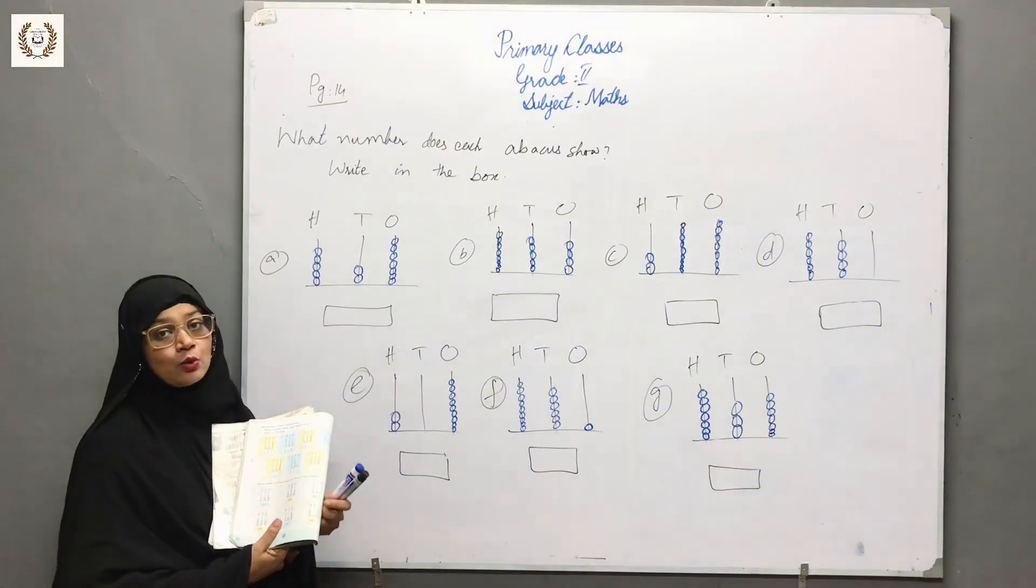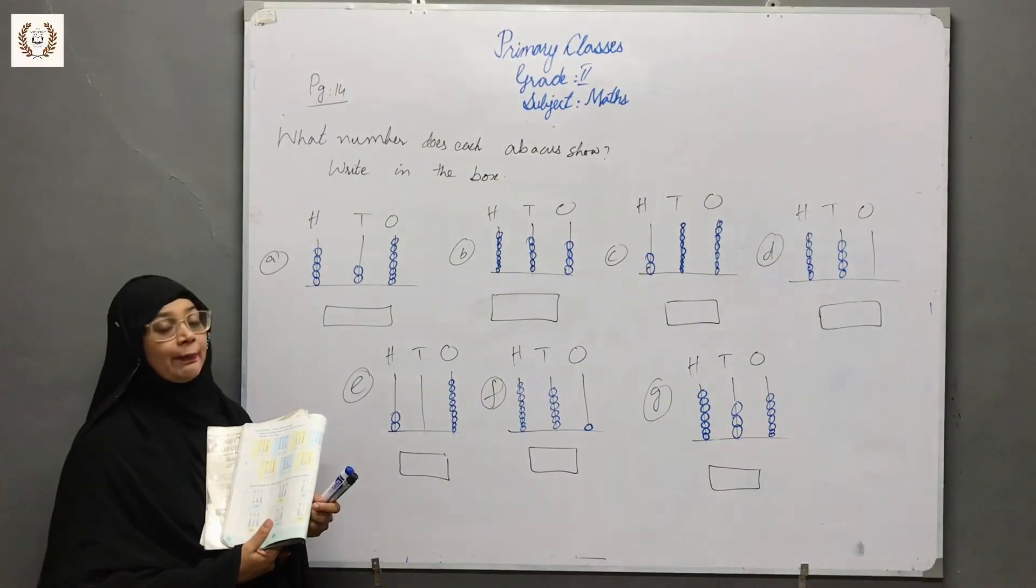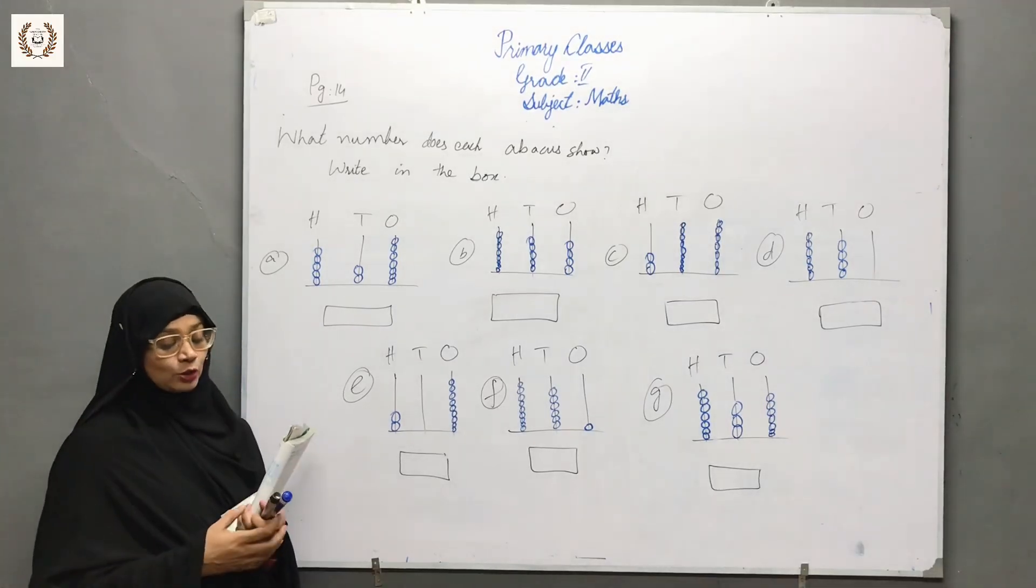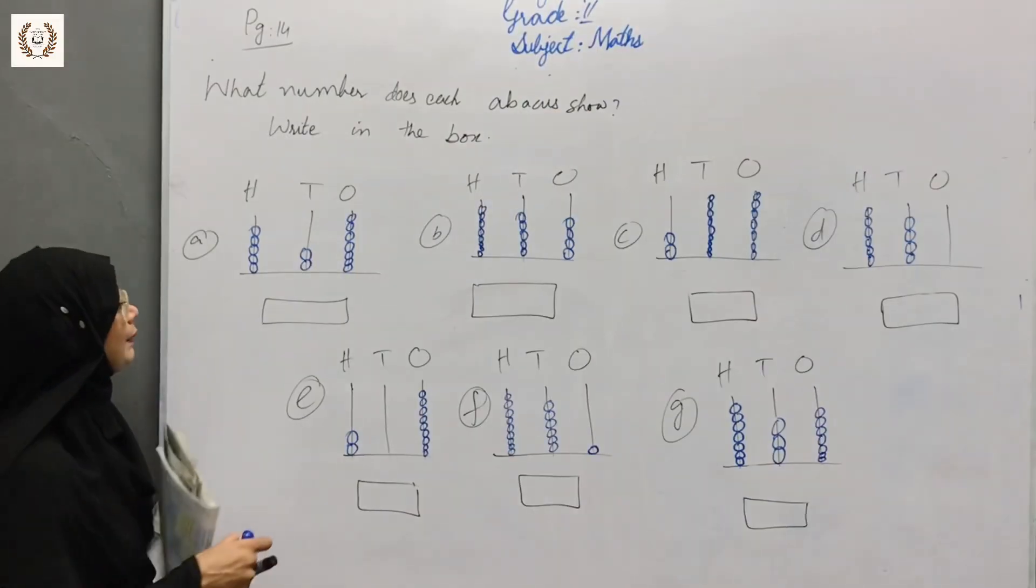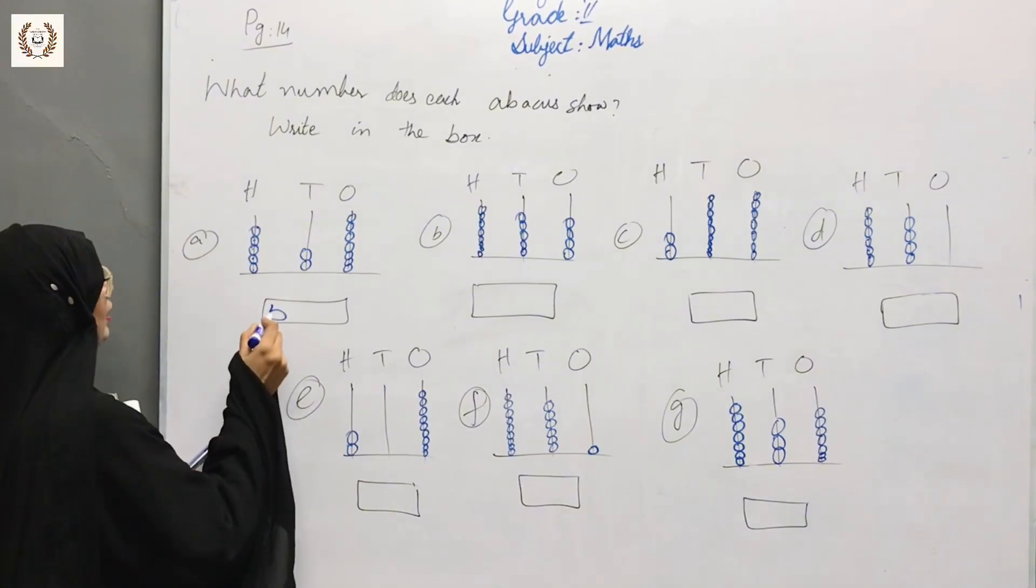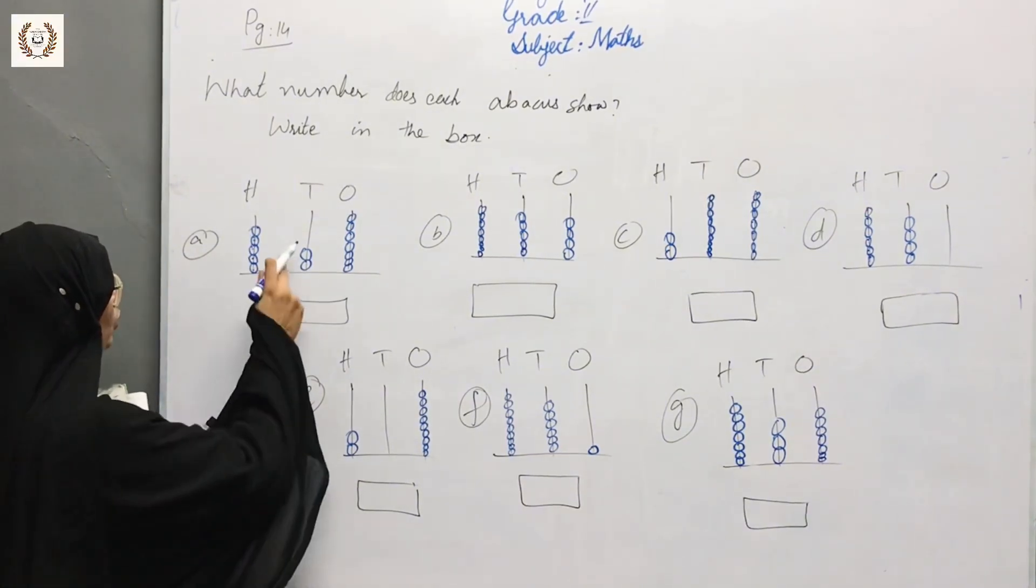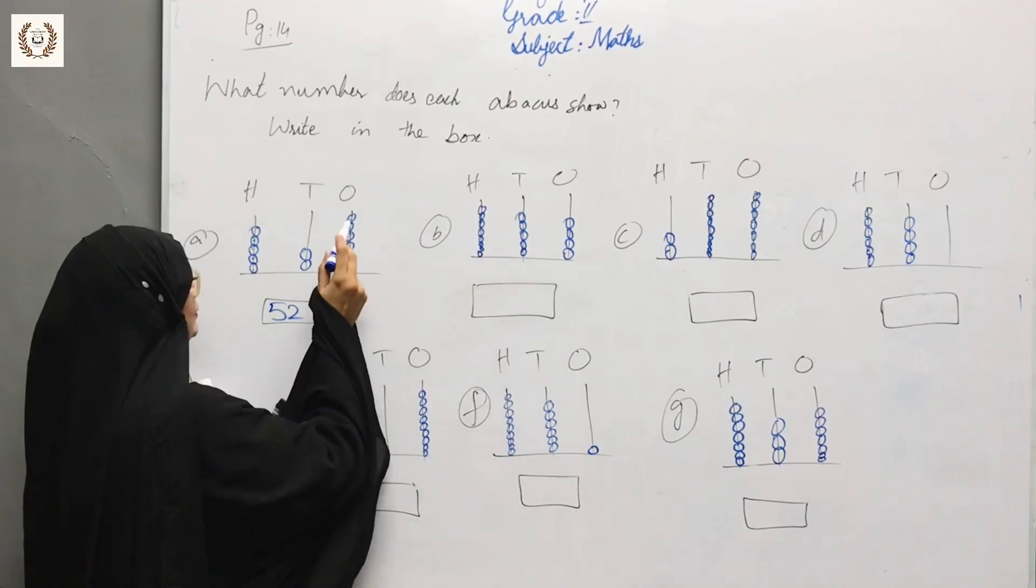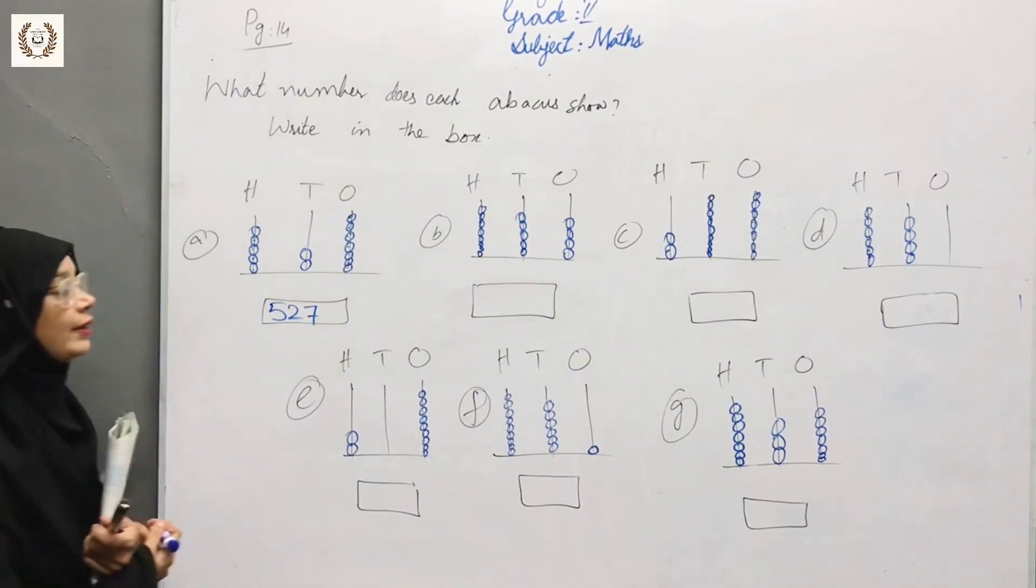In place value, you will count hundreds, tens, and ones. First, you will count how many hundreds you have: 1, 2, 3, 4, 5. That's 500. Then tens: 1, 2, 3, 4, 5, 6, 7. And ones. So this is 527.